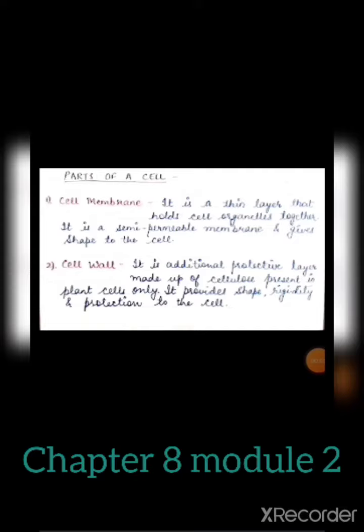Let's discuss the next topic of chapter number eight, that is parts of a cell. First is cell membrane — it is a thin layer that holds cell organelles together and it is a semi-permeable membrane.